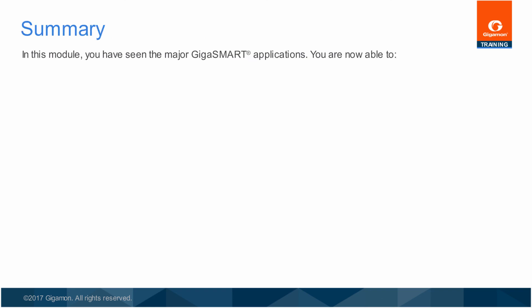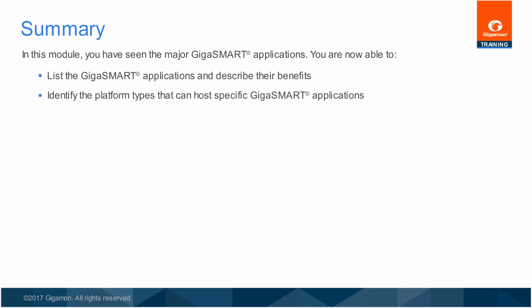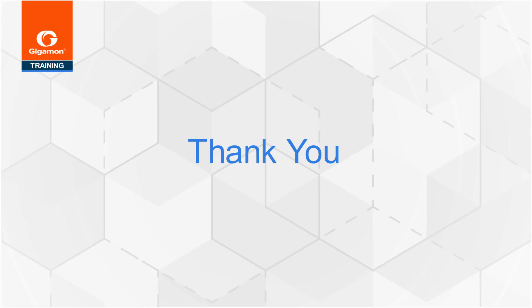In this module, you have seen the GigaSmart software applications and licenses. You are now able to list the GigaSmart applications and describe their benefits, identify the platform types that can host specific GigaSmart applications, and list the licensing options available for using the GigaSmart applications. This concludes the GigaSmart Overview Training Module. Thank you.